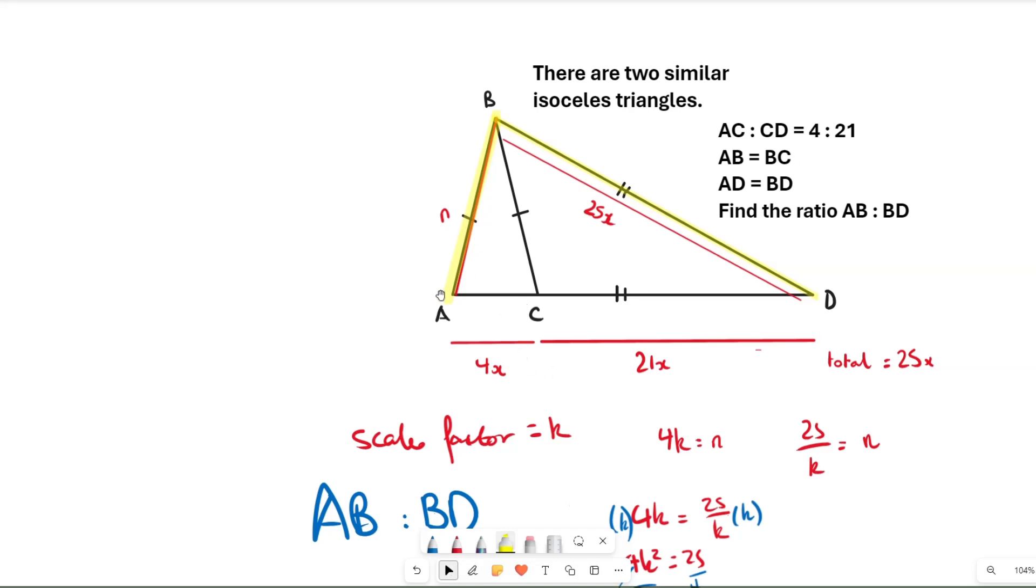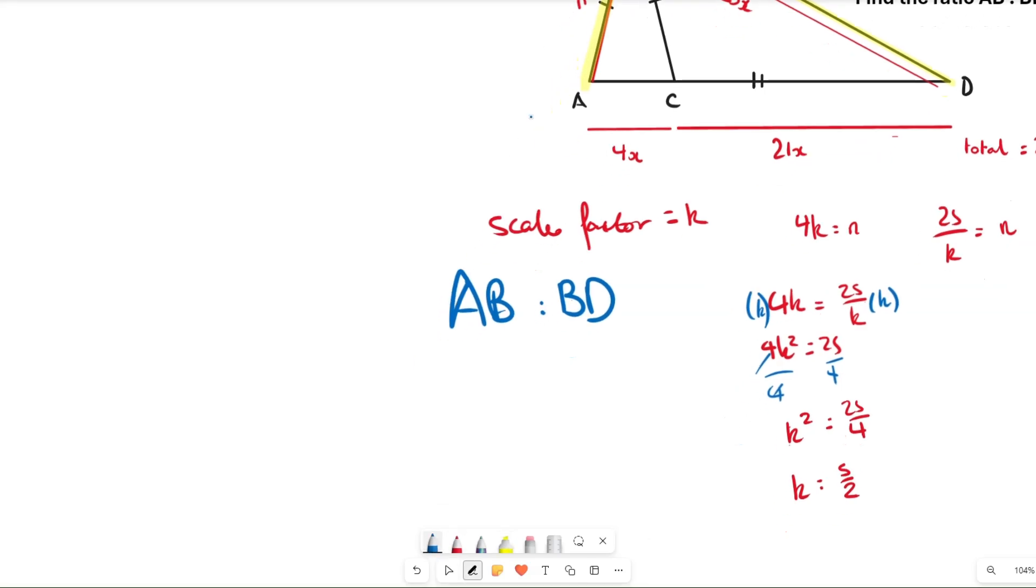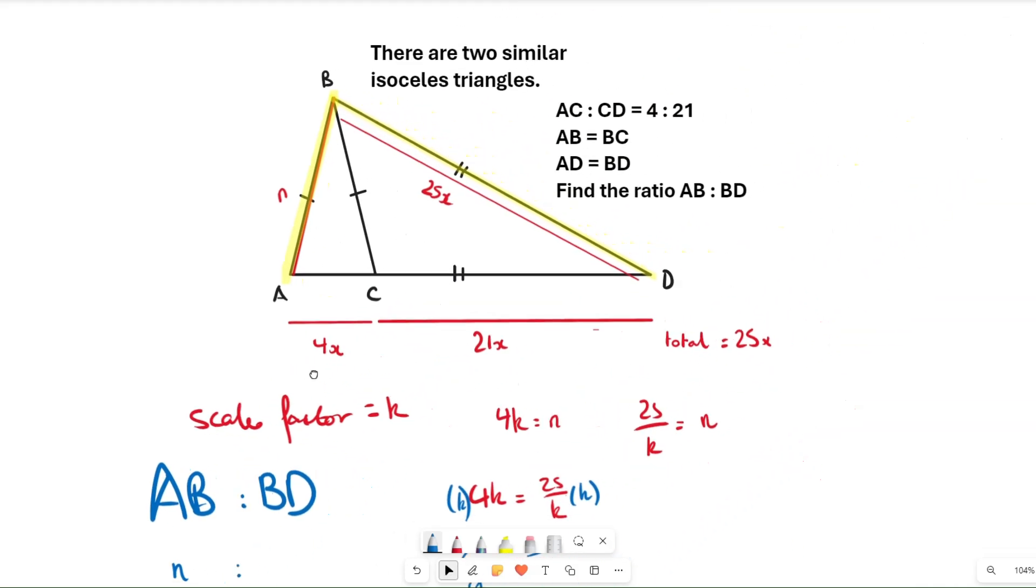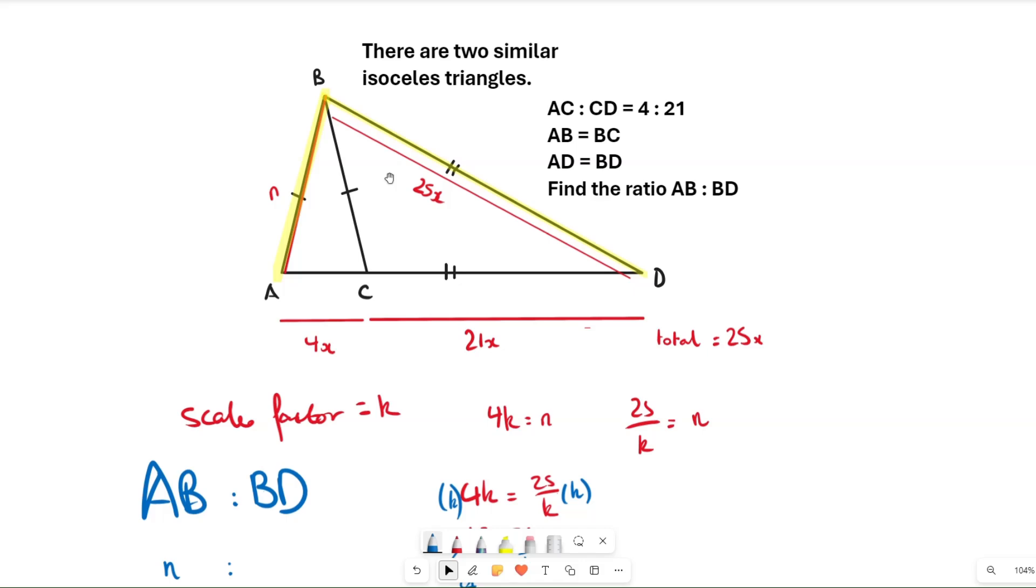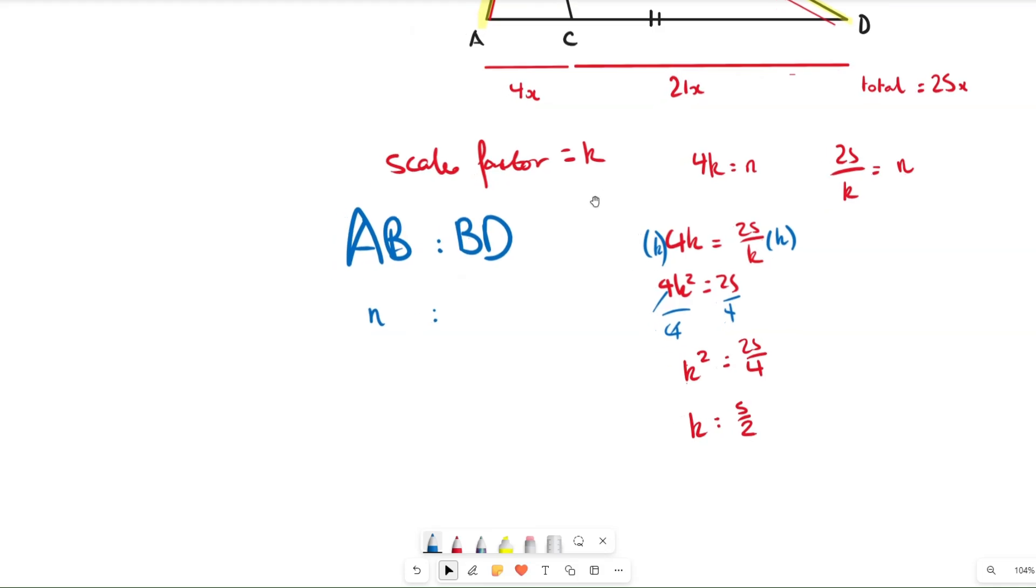So we know that AB is n, or some multiple of n, it doesn't really matter. Then how are we going to get from there to BD? We know they're both the long sides of the isosceles triangles, so we can just multiply n by the scale factor which we know is 5 over 2.